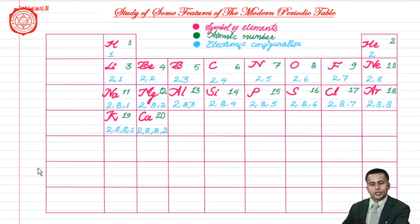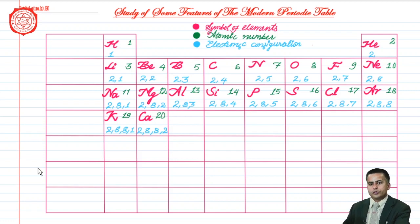The light blue color with comma, wherever you can see it, indicates the different number of electrons in different shells of those particular atoms. This is how electronic distribution in different shells can be clearly understood with the help of these light blue labels inside all the boxes in which the elements are shown.